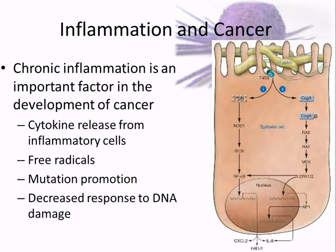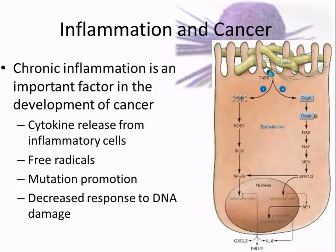Free radicals from this process attack cell membranes, enzymes, and nuclear DNA. They're unpaired electrons — like a hydrogen that's missing an electron — that start attacking everything including nucleic acids, causing DNA changes that can lead to cancer.